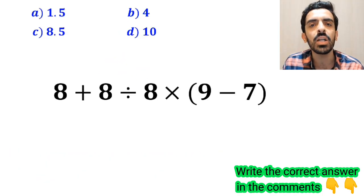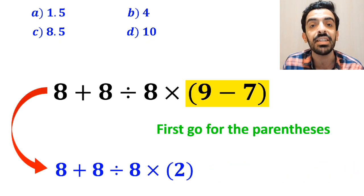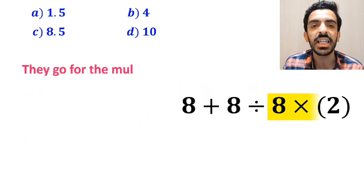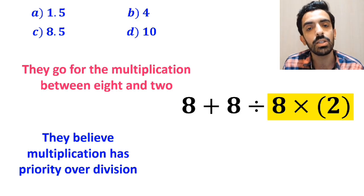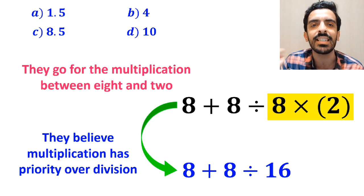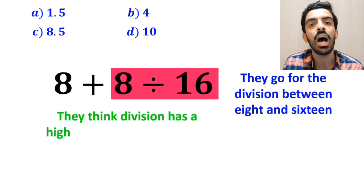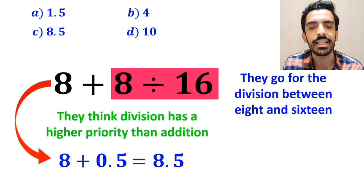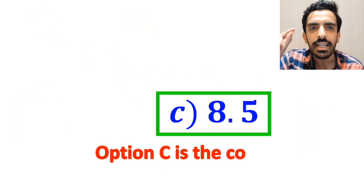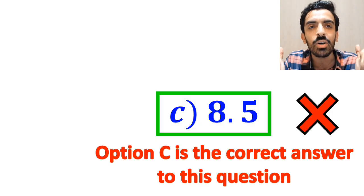Some other people first go for the parenthesis and rewrite the expression as 8 plus 8 divided by 8 then times 2. In the next step they multiply 8 and 2 because they believe multiplication has priority over division, simplifying to 8 plus 8 divided by 16. Then they divide 8 by 16, getting 8 plus 0.5, which gives them 8.5 — concluding option C is correct. But we were tricked and it's not the correct answer.